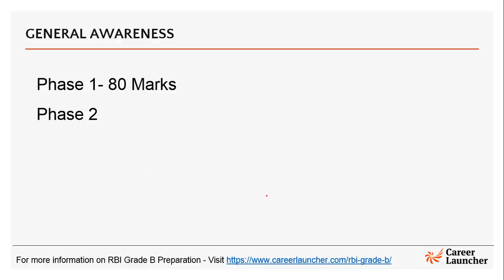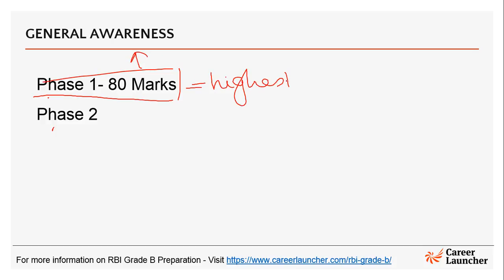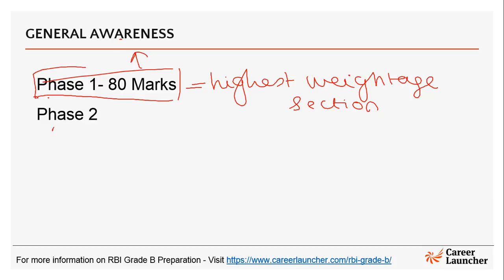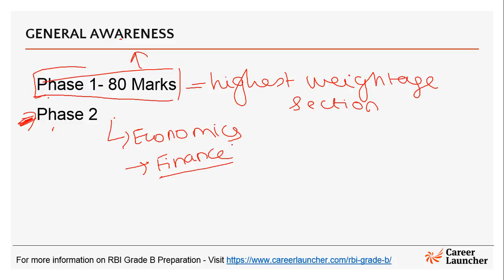General Awareness has importance both in your Phase 1 and Phase 2 exam. In Phase 1, about 80 marks are dedicated towards the General Awareness section, making it one of the highest weightage sections. It also helps in Phase 2 because topics like Economics and Finance — two important topics in Phase 2 — have a lot of questions based on General Awareness related to economics and finance.